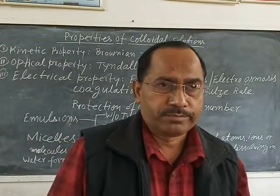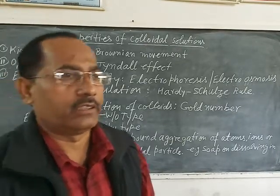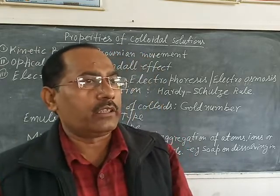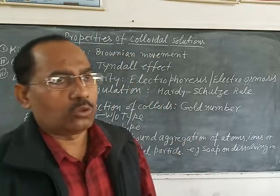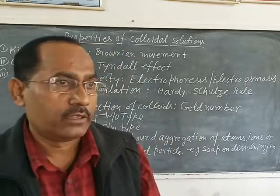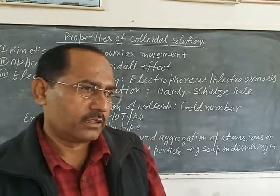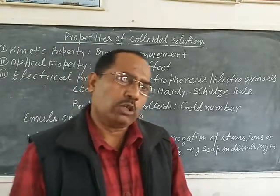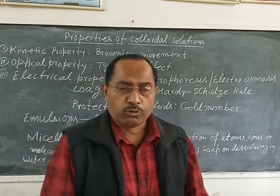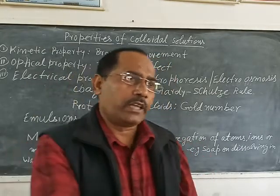An important rule is the Hardy-Schulze rule. According to this rule, the coagulating power of an electrolyte is directly proportional to the charge of the active ion. For example, with electrolytes NaCl, MgCl₂, and AlCl₃, the cations are Na⁺, Mg²⁺, and Al³⁺. The coagulating power of NaCl is less than MgCl₂, which is less than AlCl₃. As the positive charge of the cation increases, the coagulating power increases.